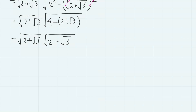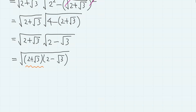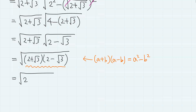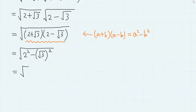And if we repeat this again, it is (2 + √3) times (2 − √3). So it is √(2 squared minus √3 squared), which is √(4 minus 3), which is √1, which is 1.